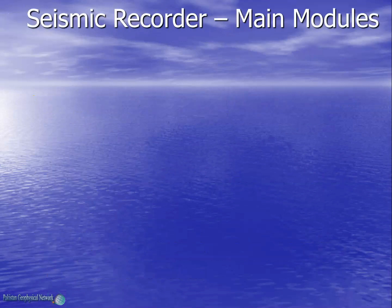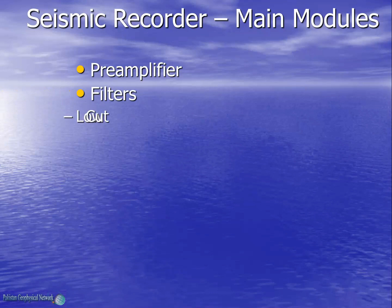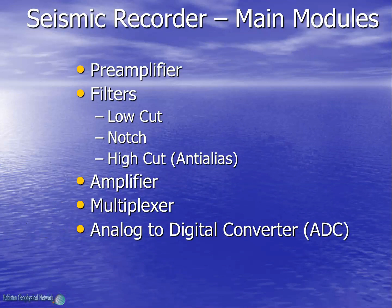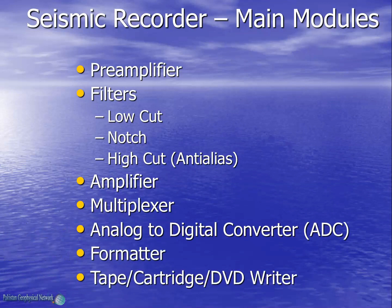The main modules of a seismic recorder are: pre-amplifier, various types of filters, amplifier, multiplexer, analog to digital converter, formatter, and finally a tape cartridge or DVD writer.